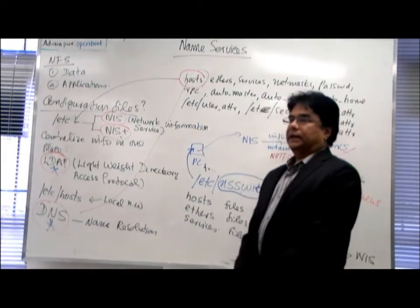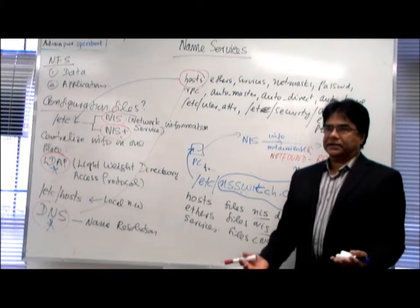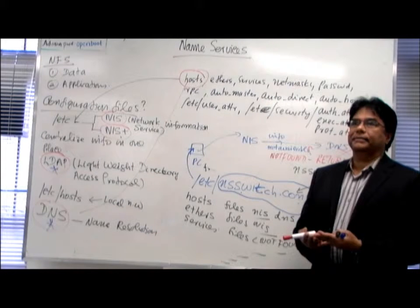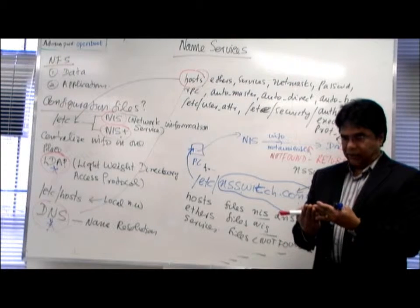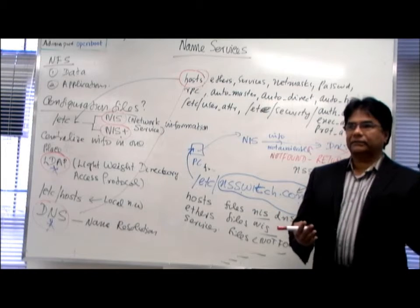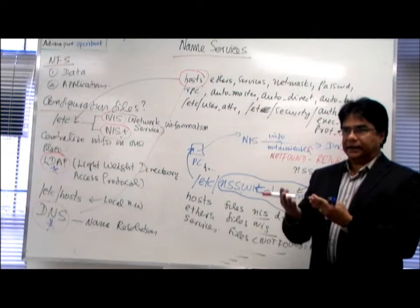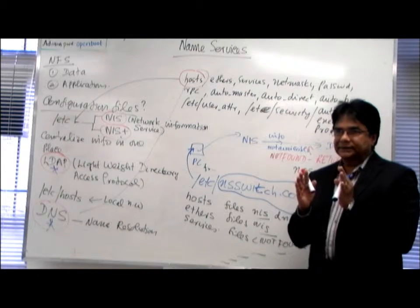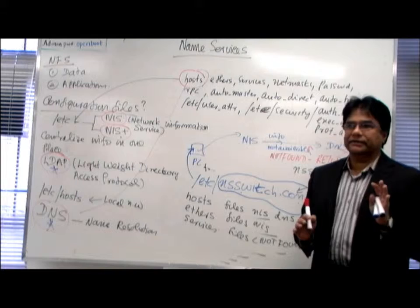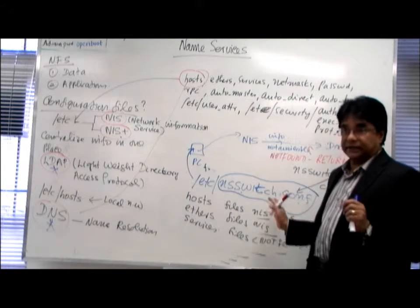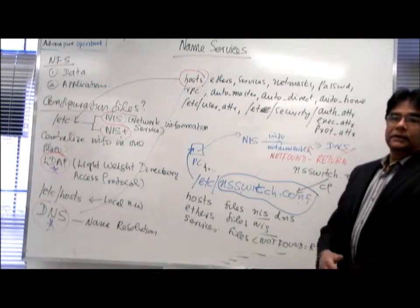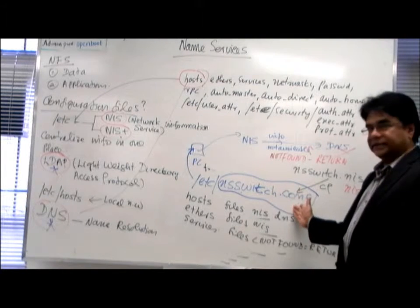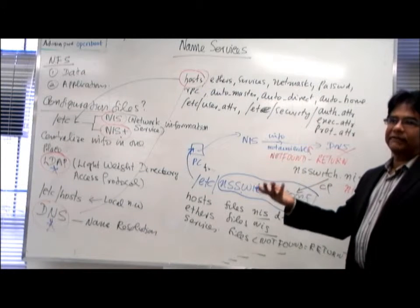NSSwitch is like a director. Say for example, one person walks in, and you have a file: Tom goes to Classroom 5, Tim goes to Classroom 3, Kim goes to Classroom 10. It directs you — okay, go to DNS, go to this service. But you should have configured all these services first, otherwise it doesn't work. You have to either modify the file or copy whichever appropriate template and then modify it the way you want.